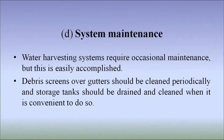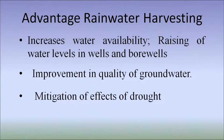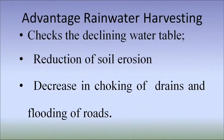System maintenance: a water harvesting system requires occasional maintenance but this is easily accomplished. Debris screens over gutters should be cleaned periodically, and storage tanks should be drained and cleaned when convenient. The advantages of rainwater harvesting are: it increases water availability; raises the water level in wells and bore wells; brings about improvement in quality of groundwater; and is very helpful in mitigation of the effects of drought. Rainwater harvesting also checks the declining water table, reduces soil erosion, decreases choking of drains and flooding of roads. It is an environment-friendly method, improves the quality of groundwater through dilution of fluoride, nitrate and salinity, and also saves energy because a lot of energy is used to lift groundwater to rooftop level.